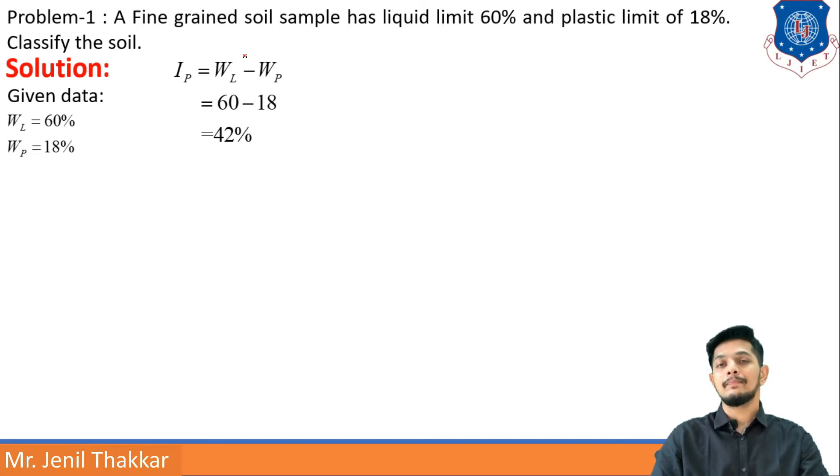Plasticity index IP equation is gap of liquid limit and plastic limit. So liquid limit is 60% and plastic limit is 18%, so 60 minus 18 comes out as 42% which is plasticity index. Now it is for fine-grained soil, so I have to go with IP A-line IS classification.